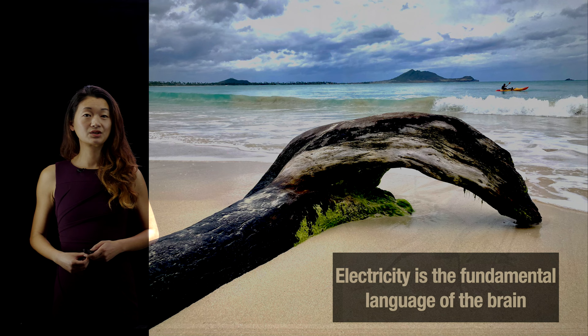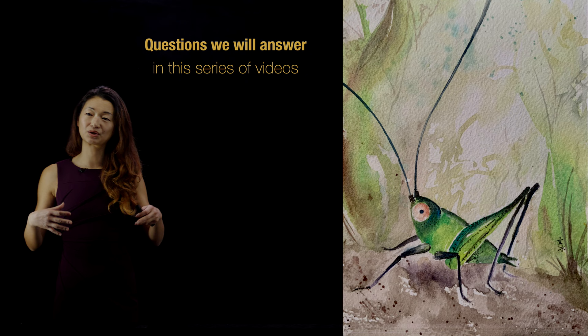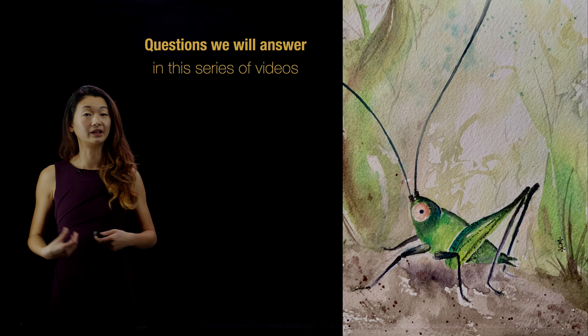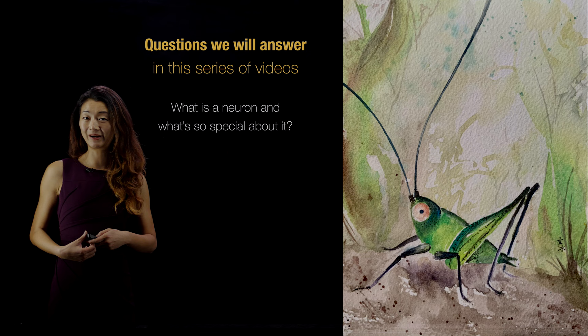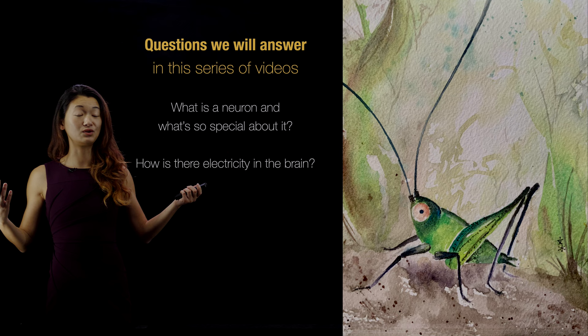The things we're going to cover in this course are a series of questions, rather basic to begin with, but we're going to dig a little deeper and try to get a mechanistic understanding of how each of these questions actually functions from a cellular and molecular perspective. First, we're going to be talking about neurons — what's a neuron, and what's so special about it. Neurons are special for lots of different reasons, but one of the reasons is that they use electrical activity as a way of passing information. But how is there electricity in the brain in the first place?